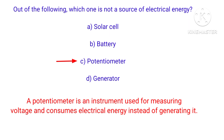Which of the following is not a source of electrical energy? A potentiometer is an instrument used for measuring voltage. It does not consume or generate any electrical energy.